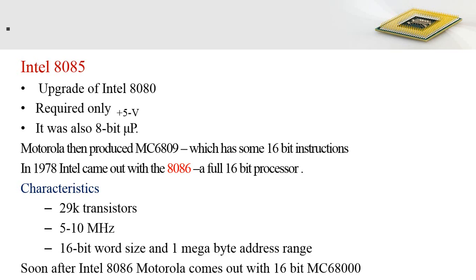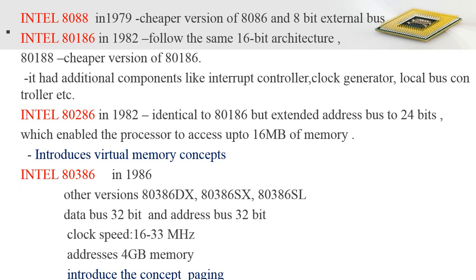Shortly after the Intel 8086, Motorola introduced its 16-bit MC68000 processor with almost all the features of the Intel 8086. Later in 1979, Intel introduced the 8088 processor, a cheaper version of the 8086 but with an external 8-bit data bus.